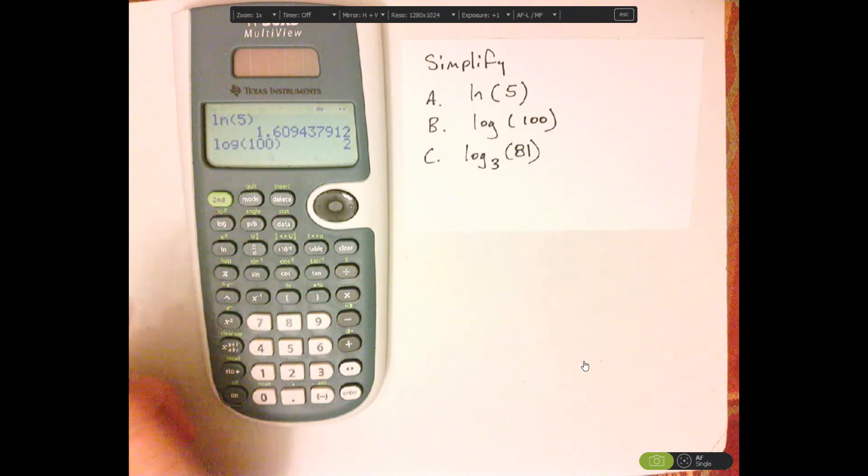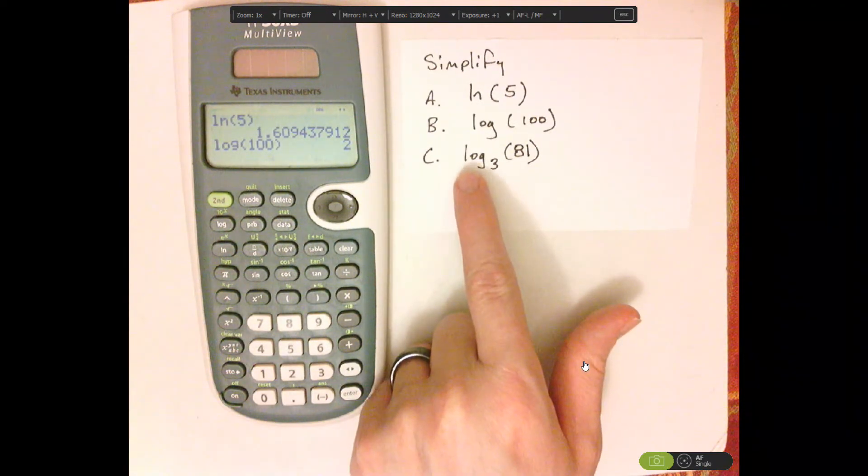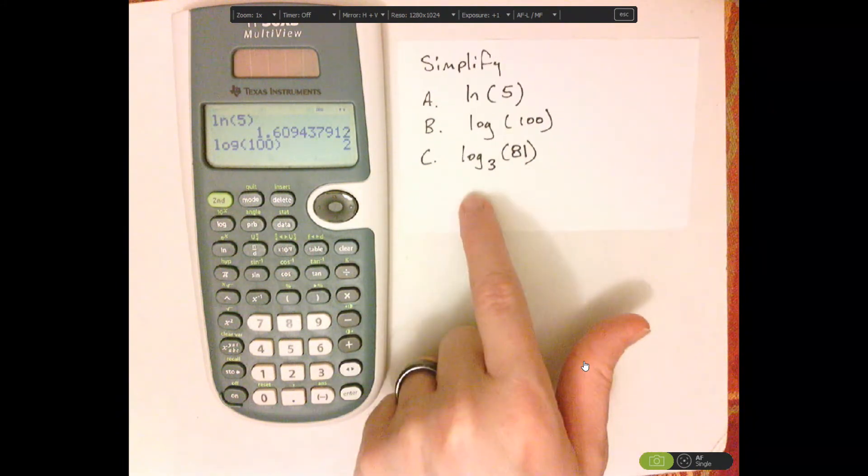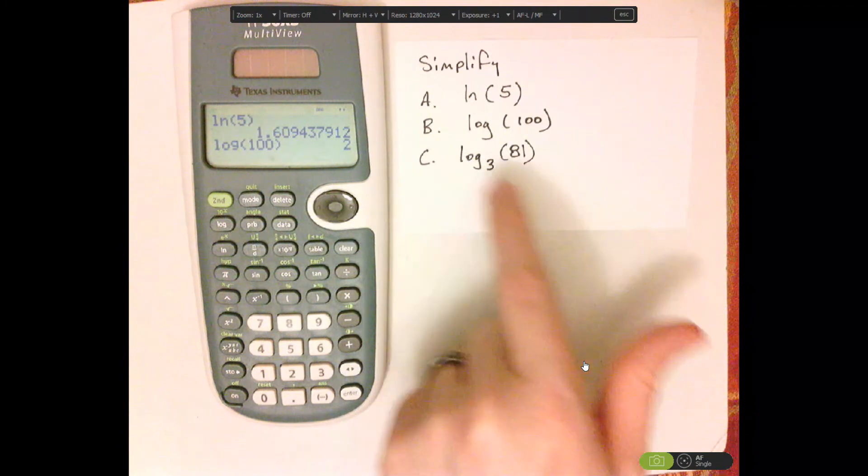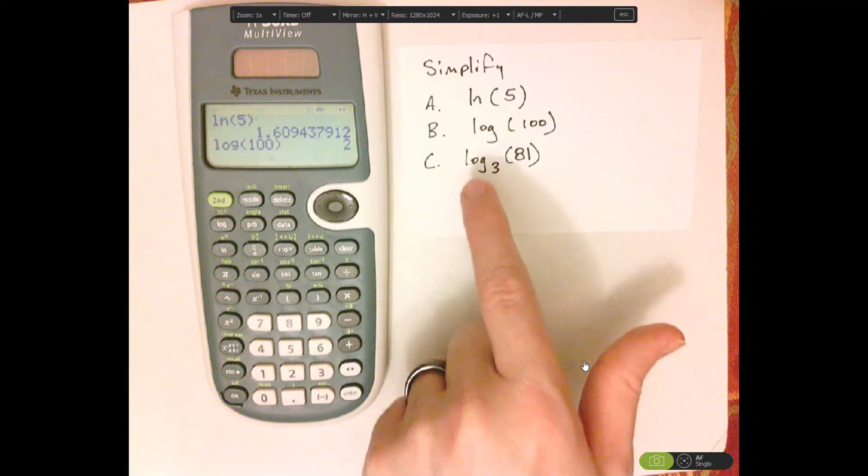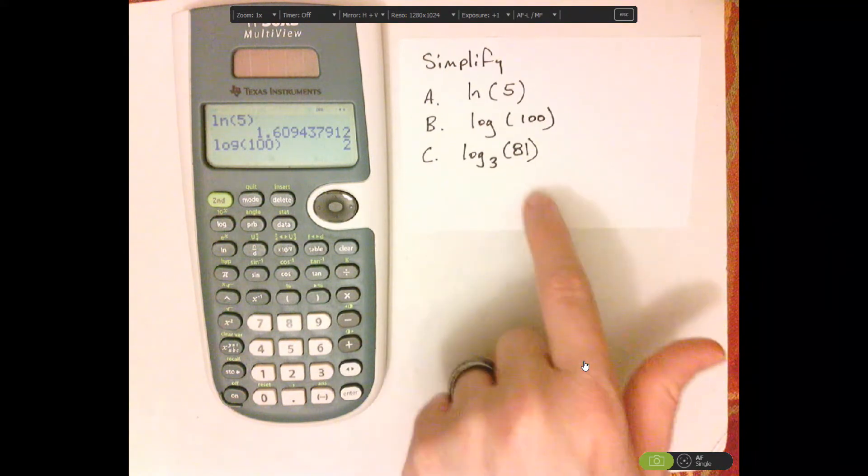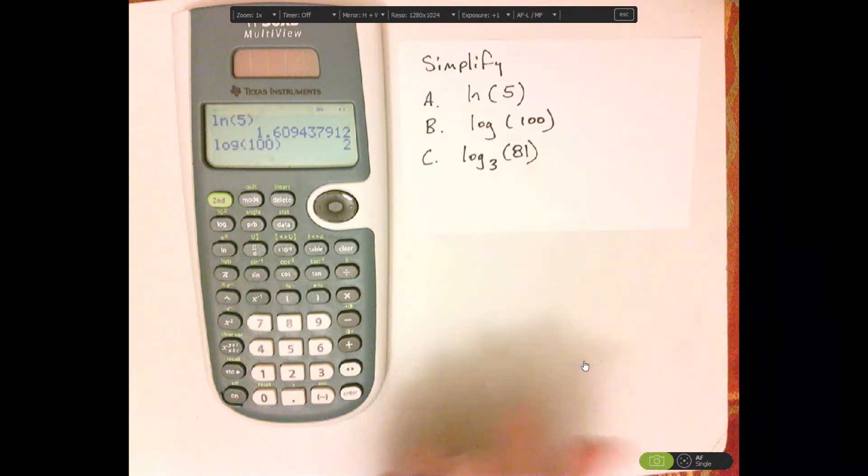Change of base basically states that you could take a log of 81 and put that over log 3, and that's the same as doing this, or natural log of 81 over the natural log of whatever the base is, and that's the same thing.